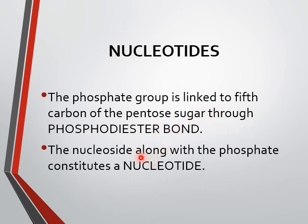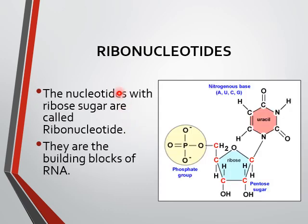The nucleoside — meaning the sugar-base — along with the phosphate group constitutes the nucleotide. So the nucleotide consists of three components: sugar, base, and phosphate group, and two bonds are present: number one is the glycosidic bond and number two is the phosphodiester bond. The nucleotides with ribose sugar are called ribonucleotides — they are building blocks of RNA. In this structure you can see the pentose ribose sugar; at carbon number one you have a nitrogen base — A, U, C, or G — where A stands for adenine, U for uracil, and C for cytosine and G for guanine.